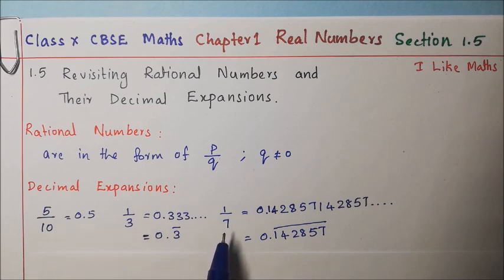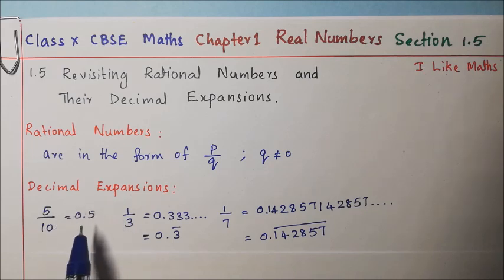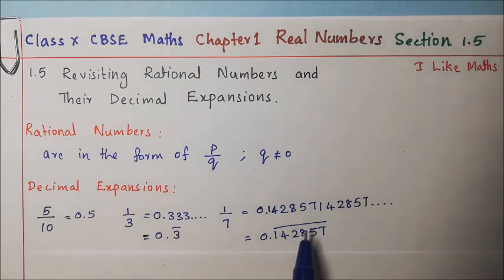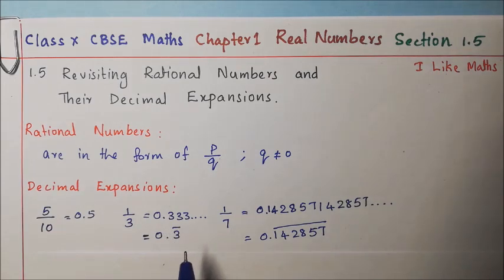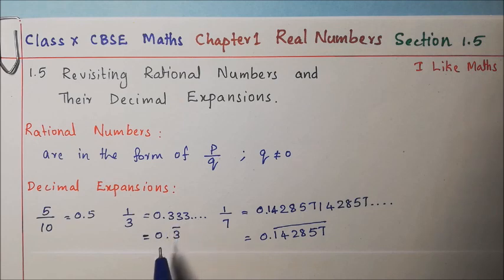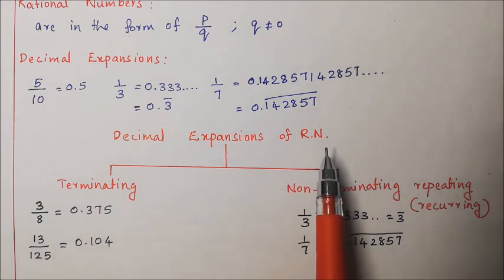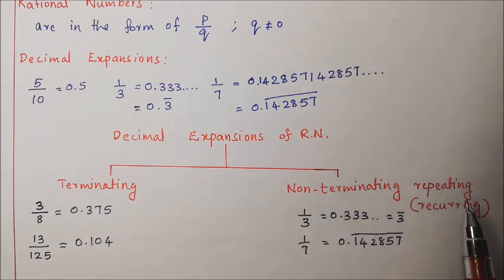The two types of decimal expansions are: first, terminating — the decimal number will not continue endlessly; it terminates after some digit, like 0.5. Second, non-terminating repeating or recurring — a set of digits or a single digit keeps repeating, as seen with 1 by 3 and 1 by 7.